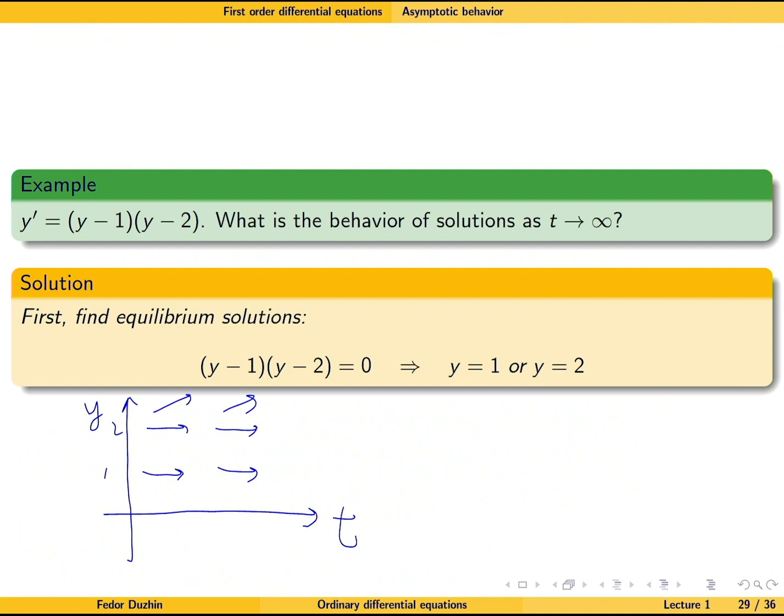But then, if y is between 1 and 2, it means that y minus 2 is negative, but y minus 1 is positive. So the right-hand side of the differential equation is going to be negative. And the arrow is going to point to the right and downward. And by the same logic, it's going to be here.